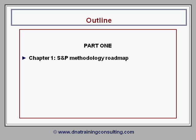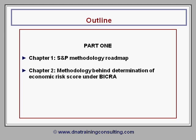In Part 1, Chapter 1 provides a roadmap that summarizes the S&P methodology and prepares you for the more detailed and very technical discussion that follows in the remaining five chapters. Chapter 2 describes the methodology behind S&P's determination of the economic risk component of its so-called BICRA, or Banking Industry Country Risk Assessment.